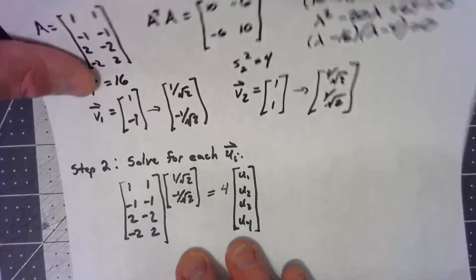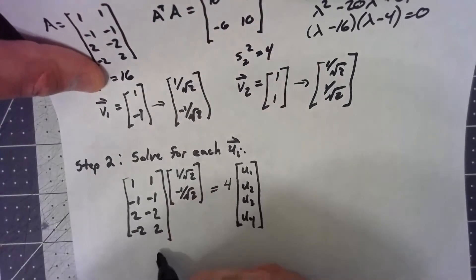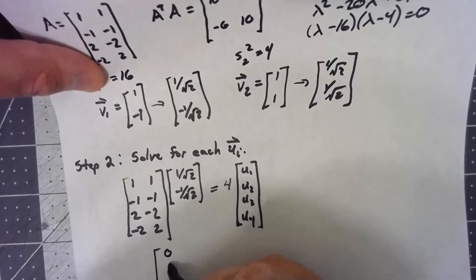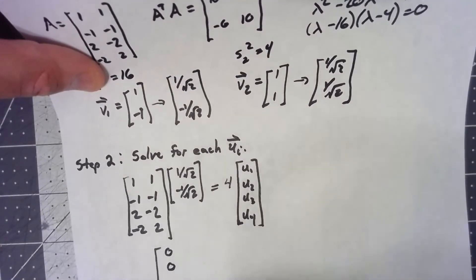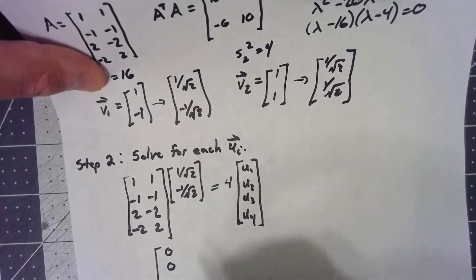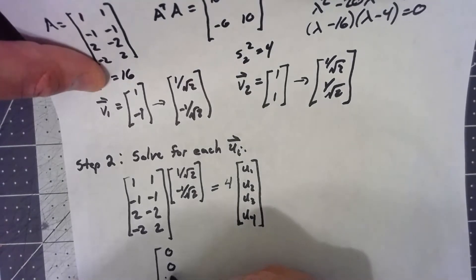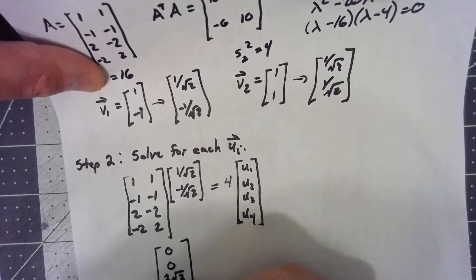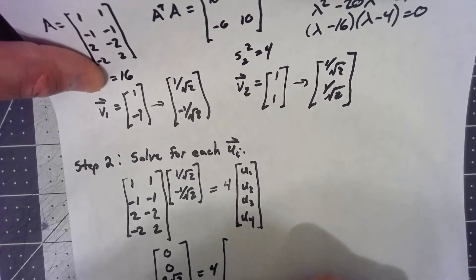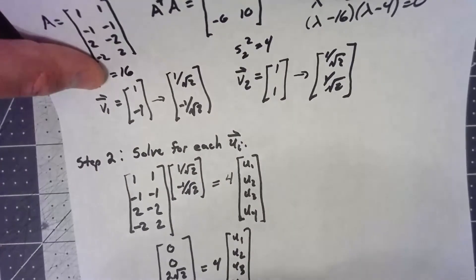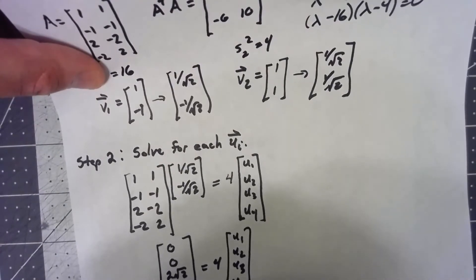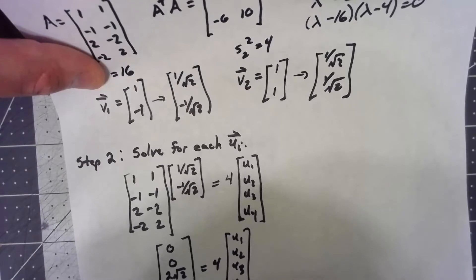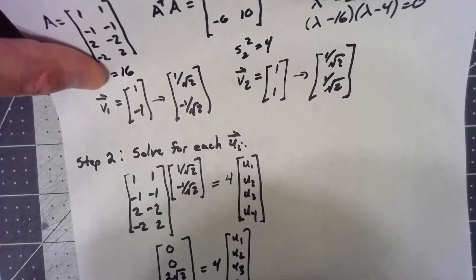But now this is really easy, because this is just a matrix multiplication. I get 0, 0, and 4 over root 2, which is 2 root 2, and negative 2 root 2 equals 4 times u1. So I just divide by 4, and my u1 vector is 0, 0, 1 over root 2, negative 1 over root 2.